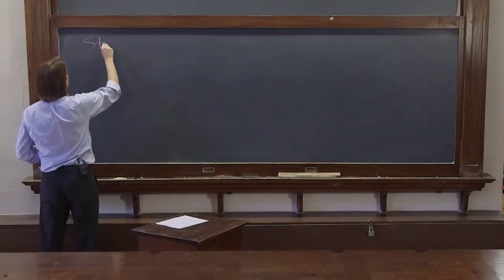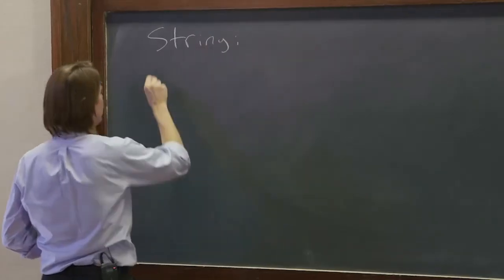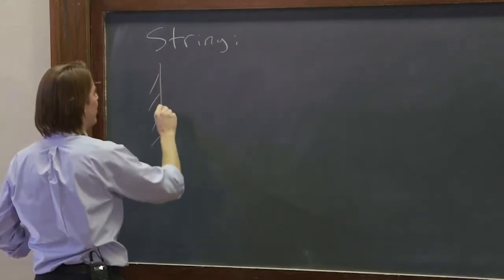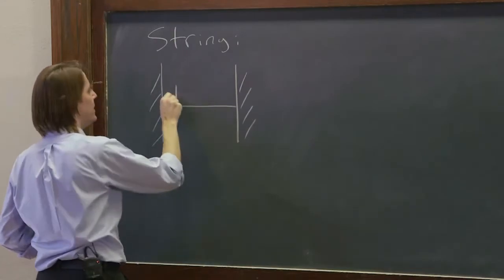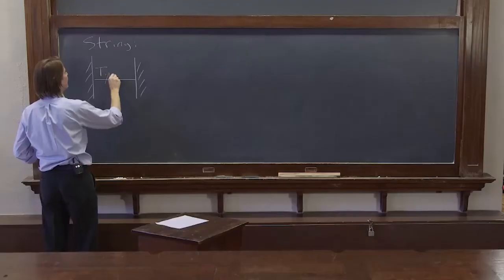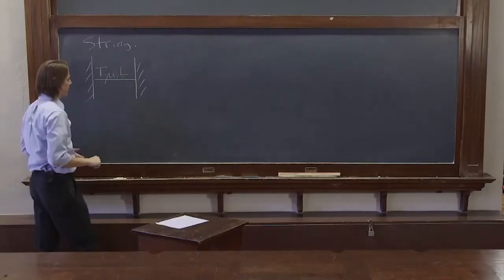Our string looks like this. We are clamping it at both ends. It has a tension, it has a mass density, and it has a length.